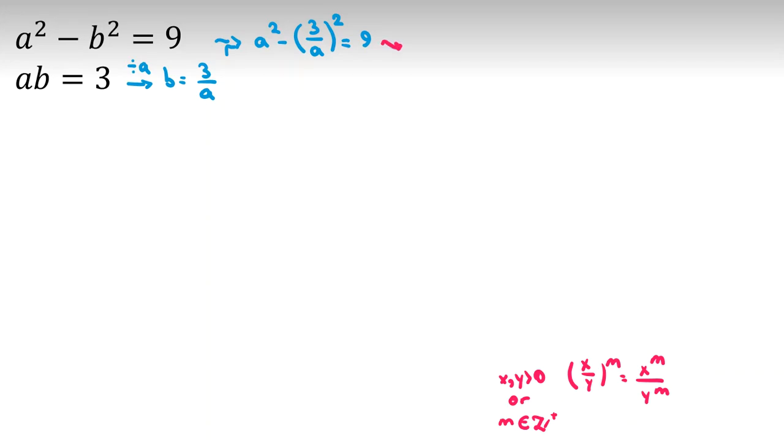Here, 2 is positive integer. If you know the exceptions, the things here, you should pay attention. If you want to learn all these things, you can send message to my WhatsApp number in the description. So, it will be a squared minus 3 squared over a squared equal to 9. And then, it will be a squared minus 9 over a squared equal to 9.